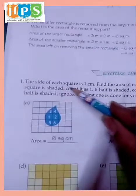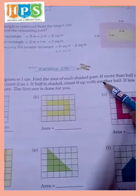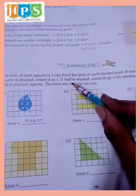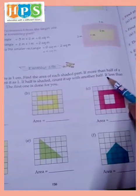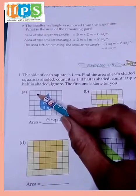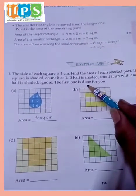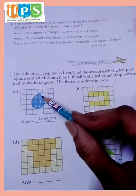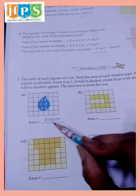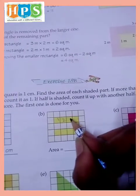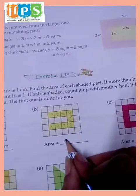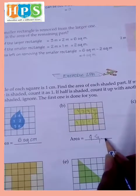19 B. The size of each square is 1 centimeter. Find the area of each shared part. If more than half of a square is shared, count it as 1. If half is shared, count it up with another half. If less than half is shared, ignore. That first one is done for you. So shaded part: 1, 2, 3, 4, 5, 6, 6 square meter. 1, 2, 3, 4, 5, 6, 7, 8 and 9. Write 9 square centimeter area.